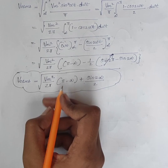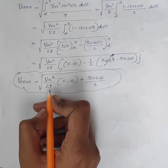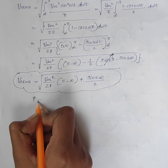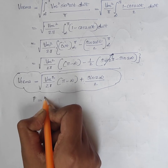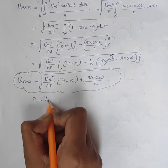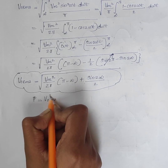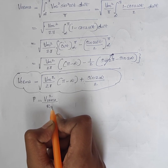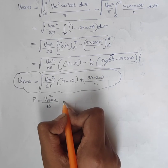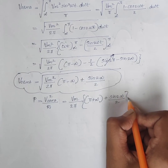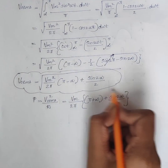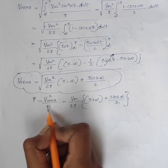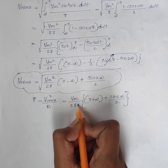Next is the output power. We know that the output power P is equal to the output voltage squared divided by resistance R, which is equal to V0 RMS squared divided by R.